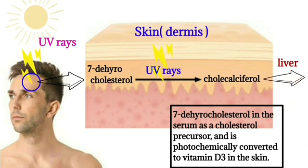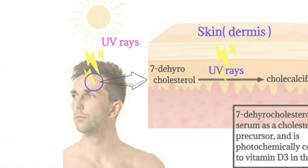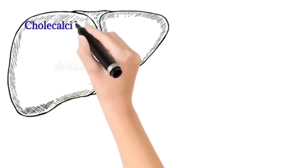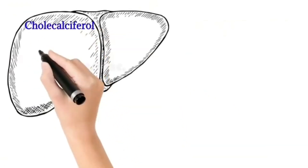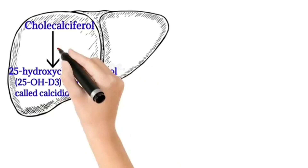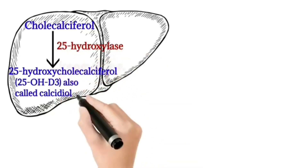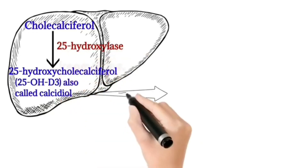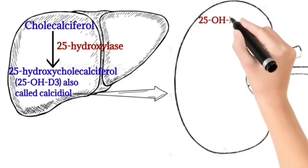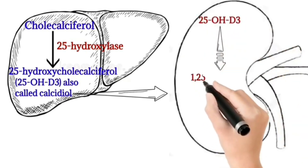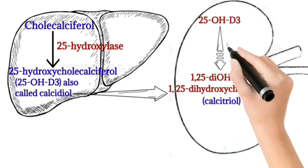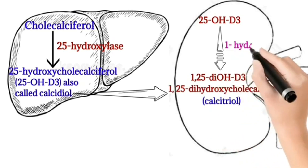In the liver, cholecalciferol is converted into 25-hydroxycholecalciferol in the presence of the enzyme 25-hydroxylase. This is the first hydroxylation step in the activation of Vitamin D3.